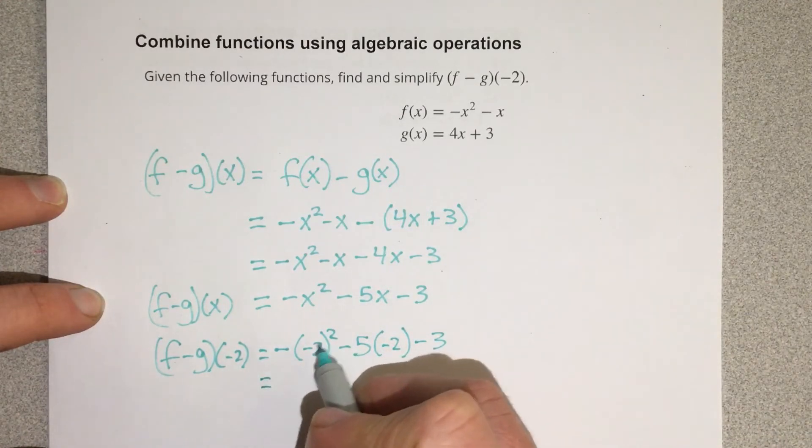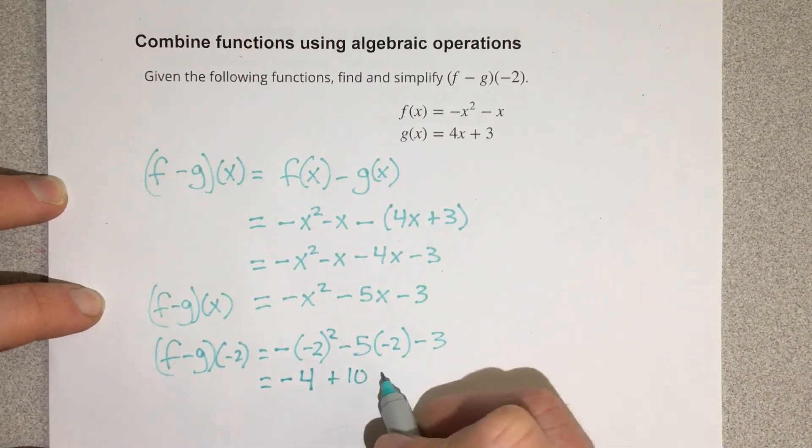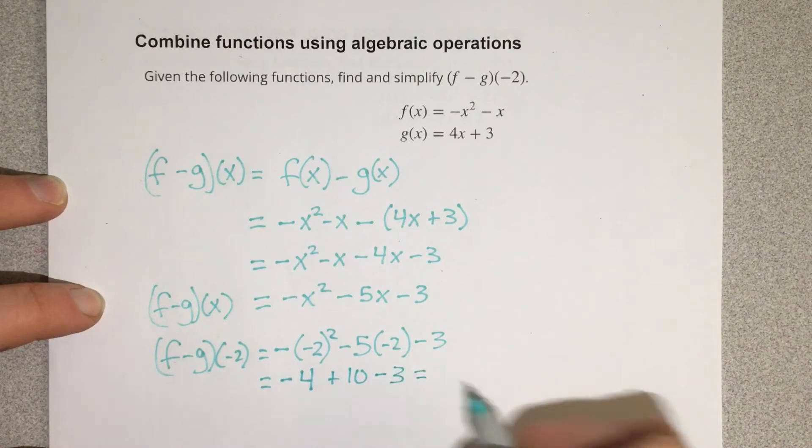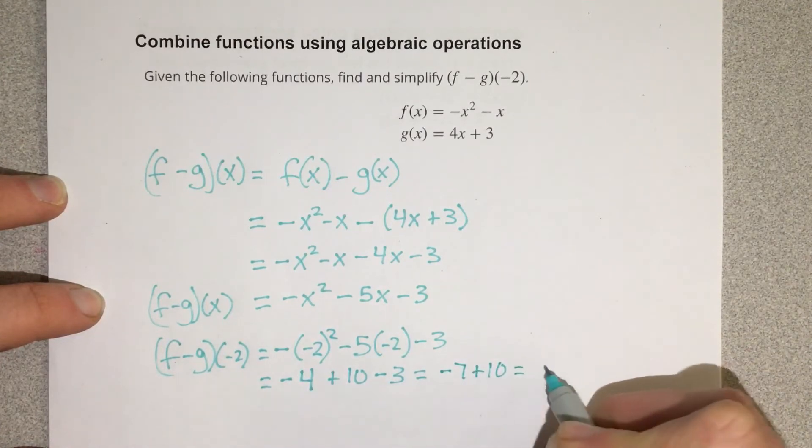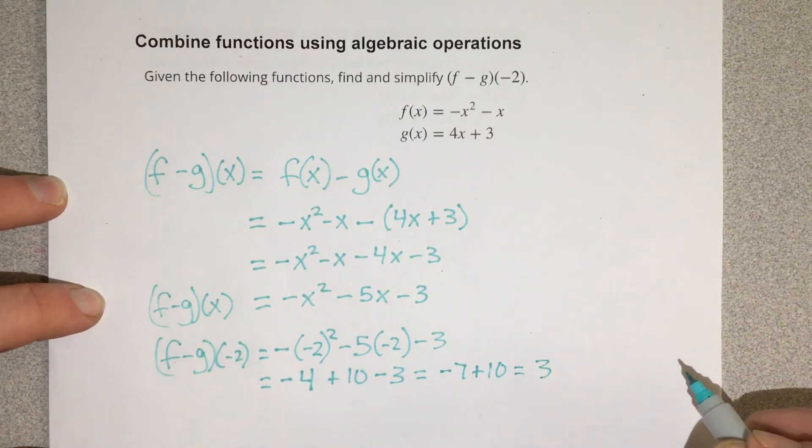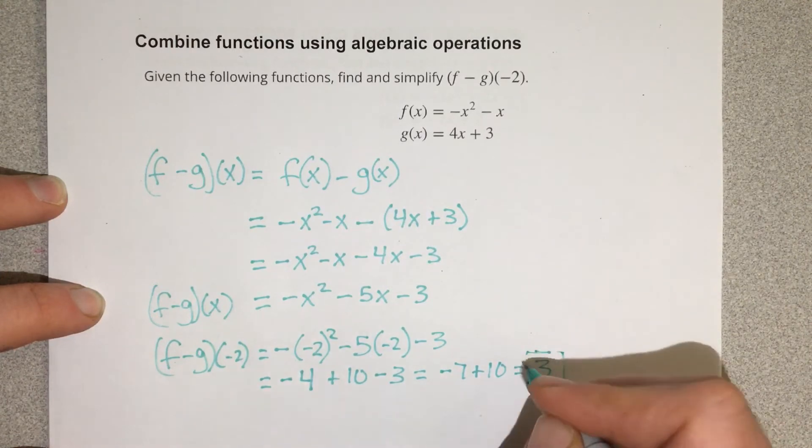That will be negative 2 squared is 4. So I have negative 4 plus 10 minus 3, which is going to be equal to negative 7 plus 10, which is 3. So when you take f minus g of negative 2, you get 3 for your solution.